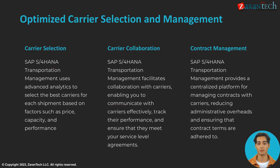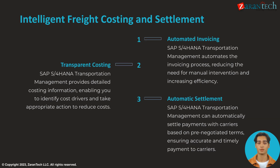SAP S/4HANA Transportation Management optimizes carrier management with capabilities like carrier selection based on analytics, collaboration portals for carriers, and centralized contract management. Transportation settlement processes are streamlined through automated freight invoicing, detailed freight costing information, and automatic settlement with carriers.